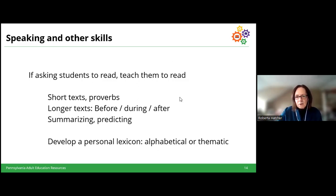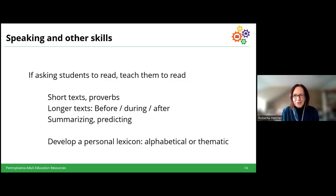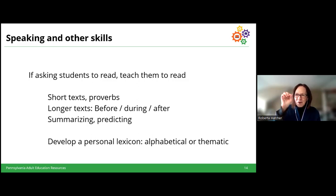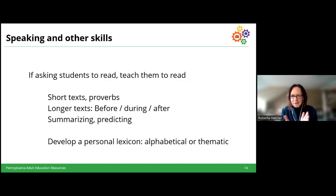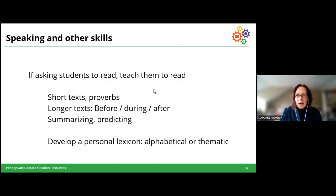One text we use at Literacy Pittsburgh for teaching conversation is called Compelling American Conversations, which works with proverbs from different cultures on topics like friendship, money, or use of time. It lessens the cognitive load of reading but brings in outside vocabulary, grammar structures, and rich topics for conversation. Encourage your student to develop a personal lexicon — an alphabetized notebook of words they pick out that they're likely to use in everyday speech. As they develop it, have them use each word in various ways and introduce it into conversation.